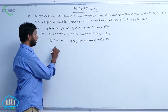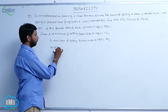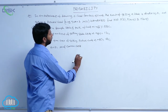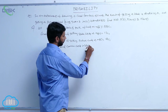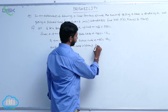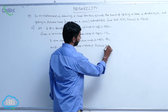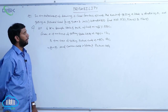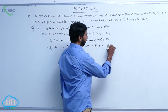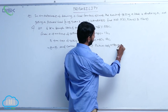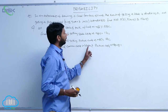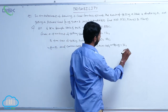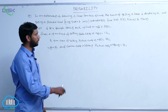Here A intersection B is equal to the number of common cards in spade and picture cards. N of A intersection B: there is one king, one queen, and one jack in spades — out of 3 cards, one is selected in 3C1 ways. So N of A intersection B is equal to 3C1.